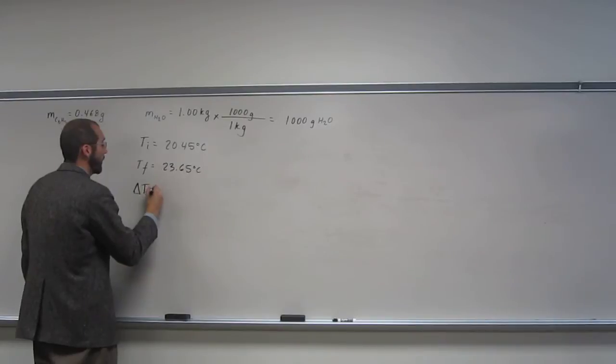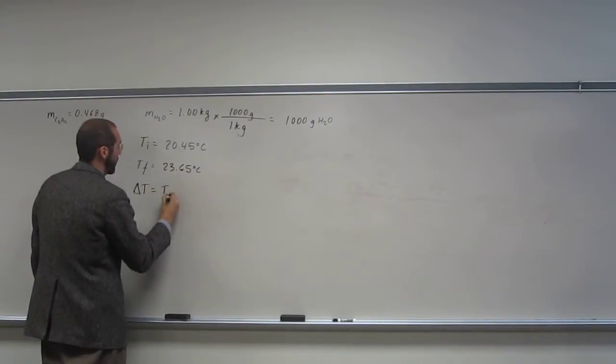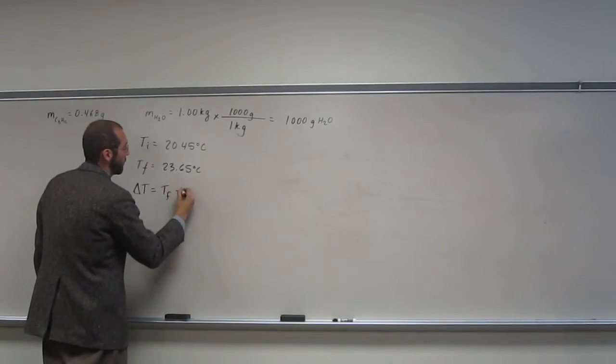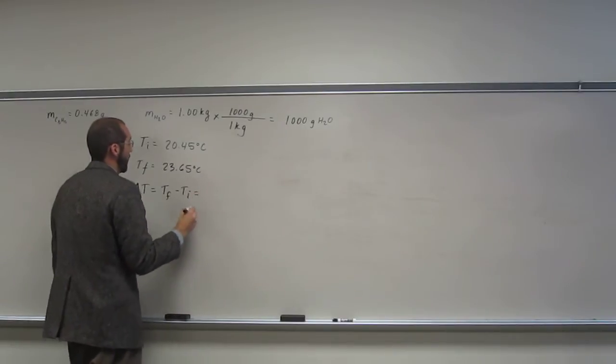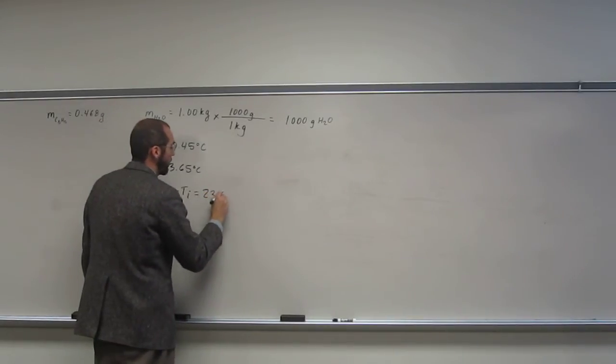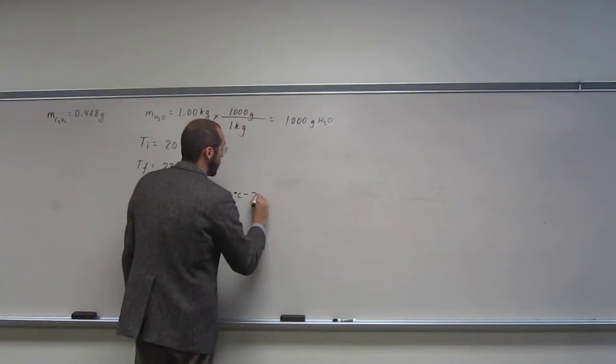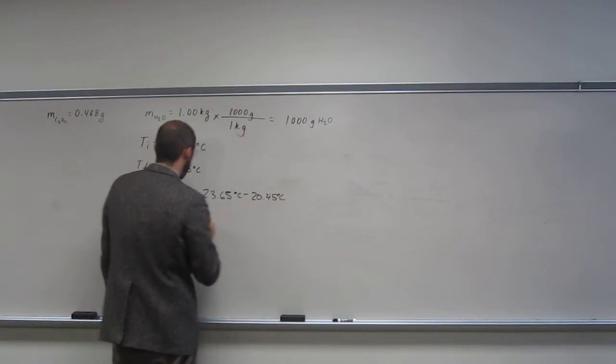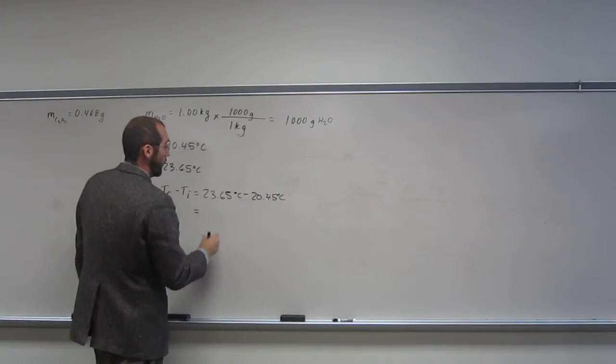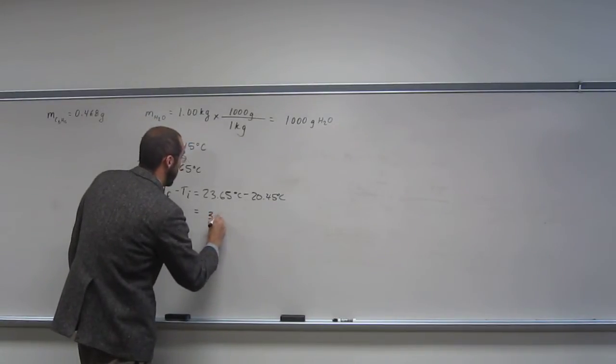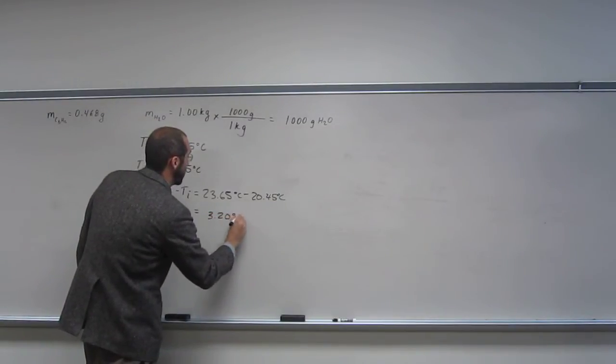So we can calculate Tf, or change in T, which is Tf minus Ti, so 23.65 degrees Celsius minus 20.45 degrees Celsius. So it's going to be 3.20 degrees C.